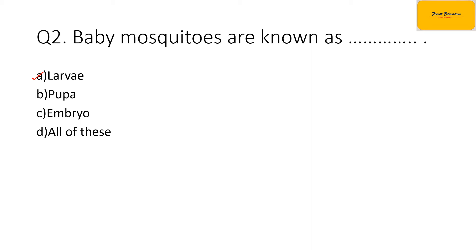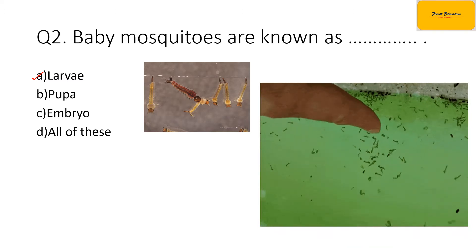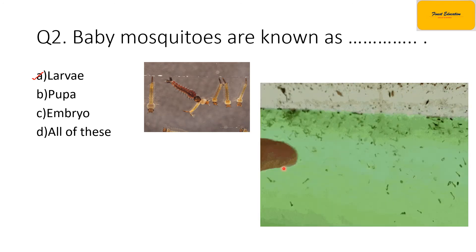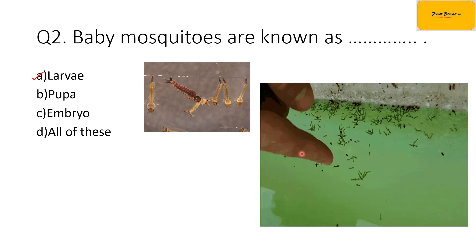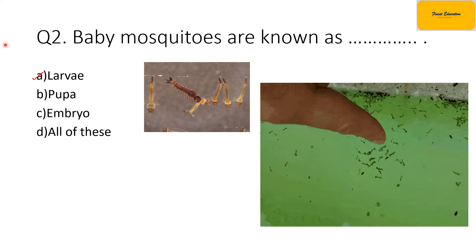The baby mosquitoes are known as larva, as shown in the image in the video. The mosquito lays eggs, and then they develop into larva. The larva is basically a thread-like structure — you can see it in the water in a straight leg structure. So the baby mosquitoes are larvae.